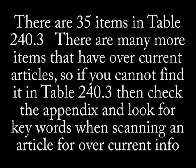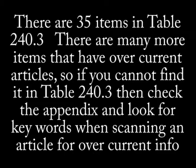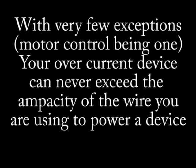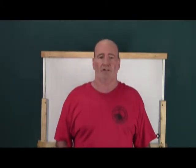Although there are 35 items in table 240.3, my main goal was to show you how to use it to track down overcurrent requirements for various situations. If asked an overcurrent question, you should first refer to table 240.3 and look for keywords like disconnect requirements or overcurrent requirements. If you cannot find your item in table 240.3, then look in the appendix for what article it comes under and begin your search there. With few exceptions, your overcurrent device can never exceed the ampacity of the wire being used on that circuit. That just about wraps up this episode. Thanks for watching and have a great day.